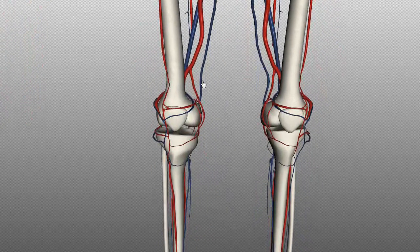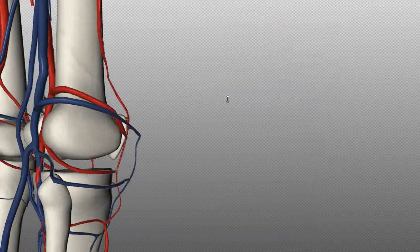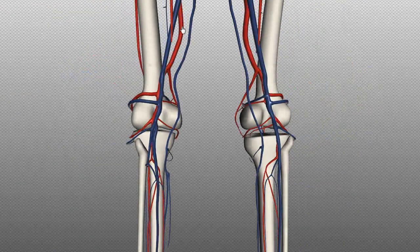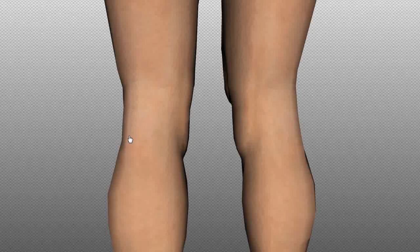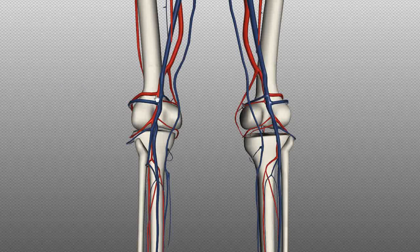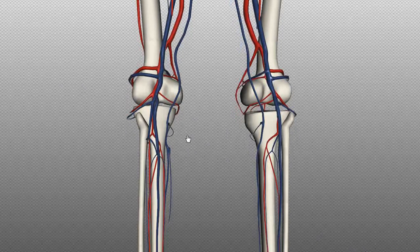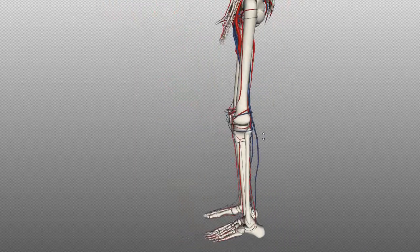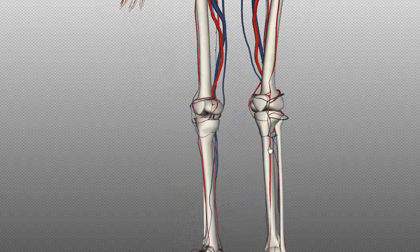We're now at the level of the knee. Rotating the model to look at the back of the knee — the femoral artery runs down and becomes the popliteal artery. This area at the back of the knee is called the popliteal fossa, and the artery here is called the popliteal artery. The popliteal artery then splits into branches, including the anterior tibial artery which branches off and runs down the course of the tibia on the anterior aspect.